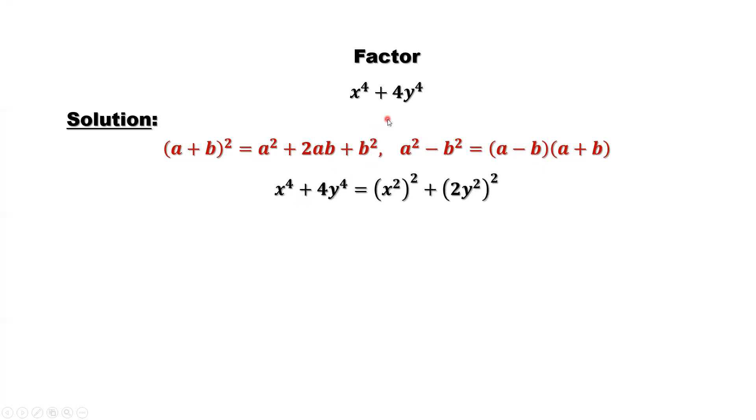Look at our problem. We can rewrite x^4 + 4y^4 as (x^2)^2 plus (2y^2)^2. This looks like this. Which term is missing? 2ab. What is a? x^2. What is b? 2y^2. So what is missing? 2ab: 2 times x^2 times 2y^2. It's missing.